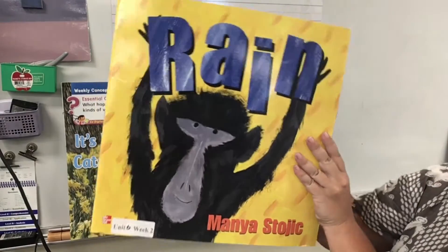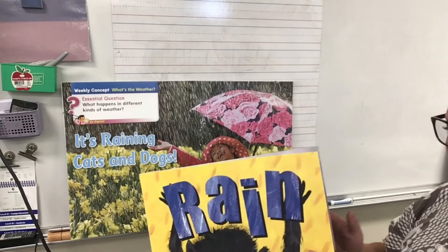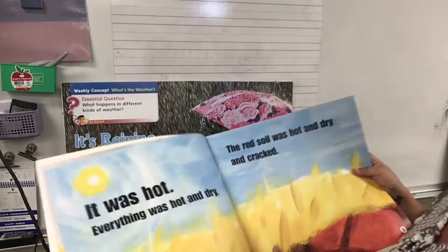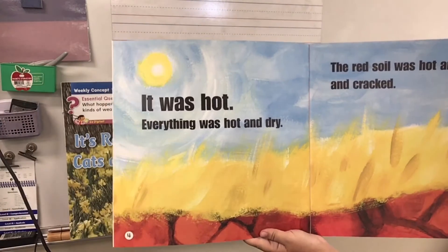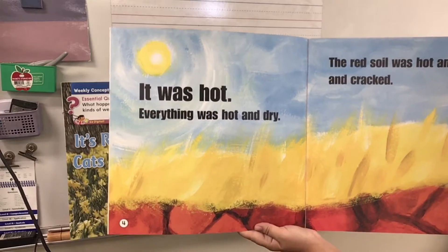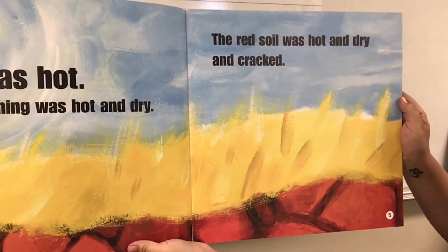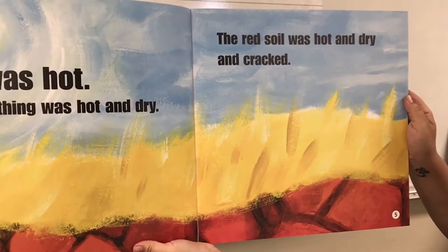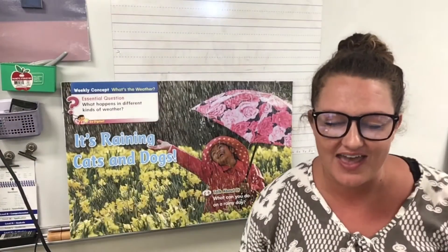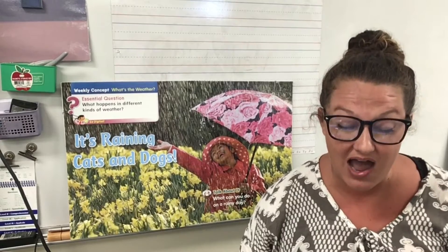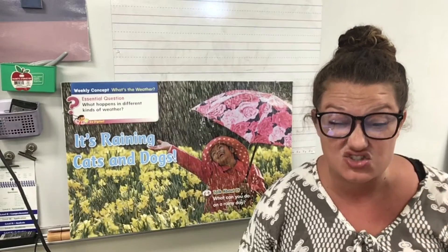Rain by Mena Stojic. It was hot. Everything was hot and dry. The red soil was hot and dry and cracked. Let's pause and picture that in our head. I can imagine the dry, cracked soil and how hot it must be in the story where they are.